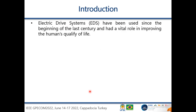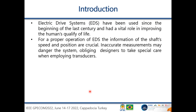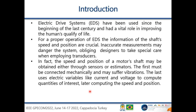Electric drive systems have been used since the beginning of the last century and have played a vital role in improving our quality of lives. Electrical drive systems are mature technology used for a long time. For proper operation, information about the shaft speed and positions are crucial. Inaccurate measurements of these quantities may endanger the system, obliging designers to take special care when employing transducers. Speed and position of a motor shaft may be obtained through sensors or estimators.